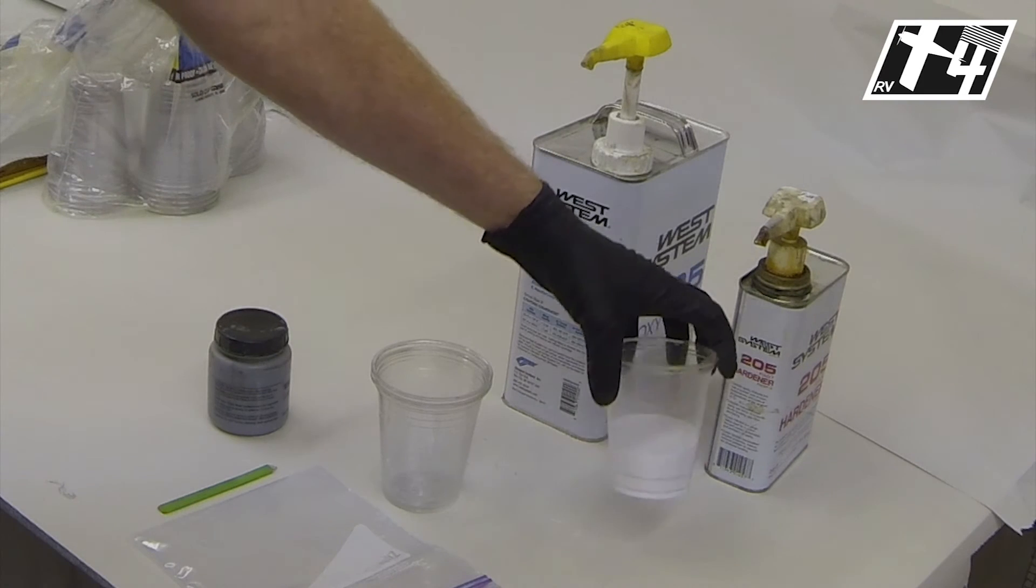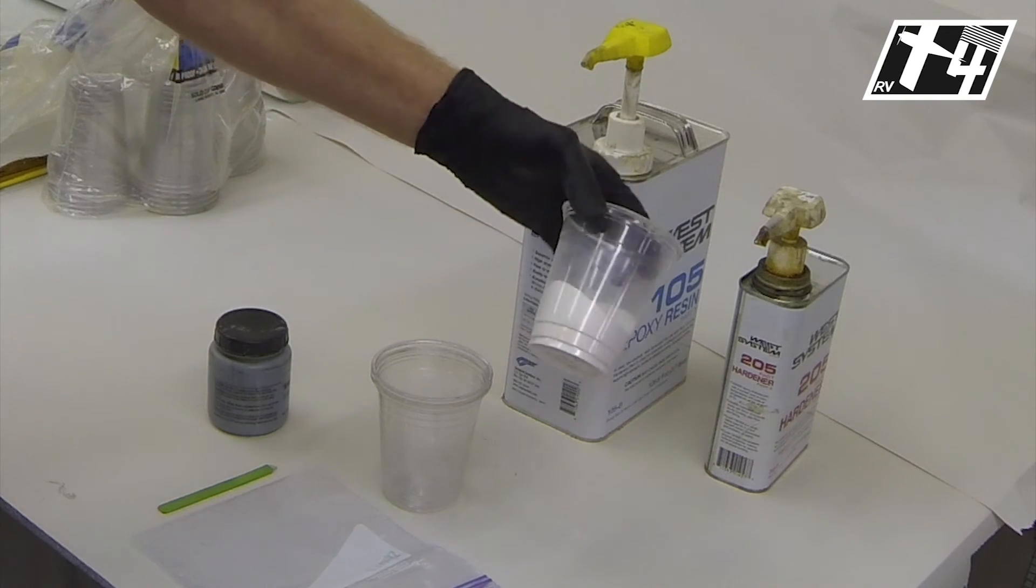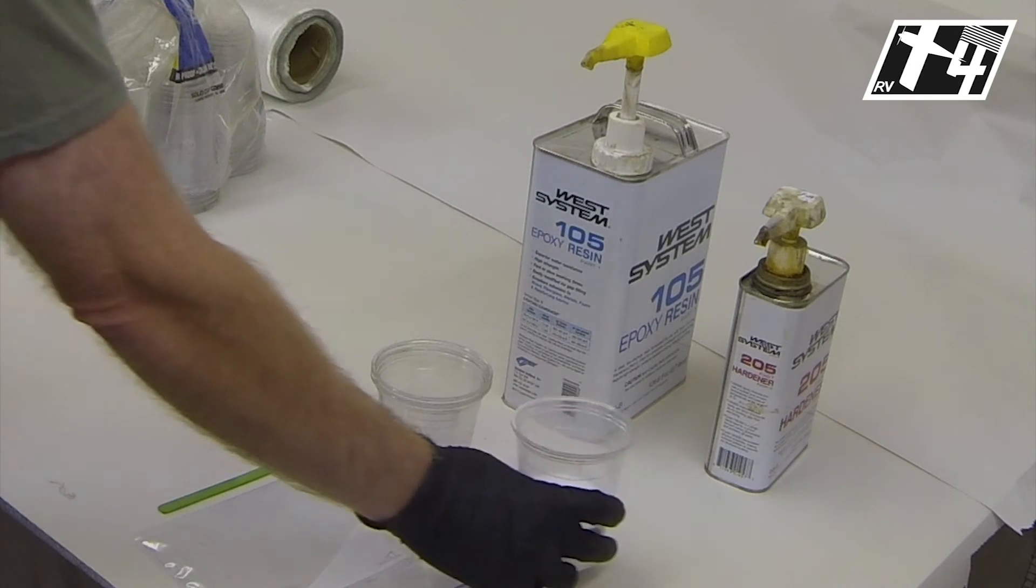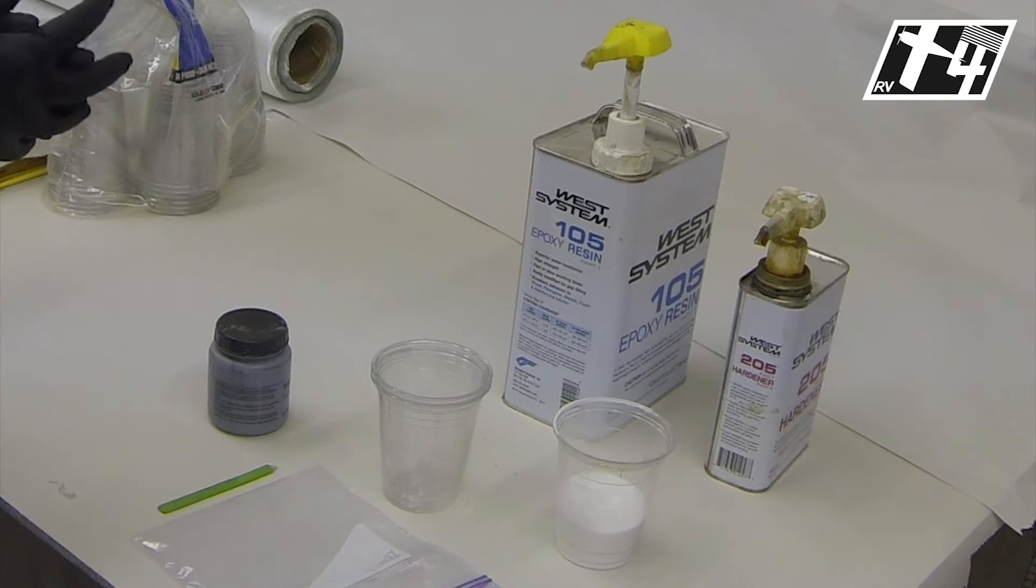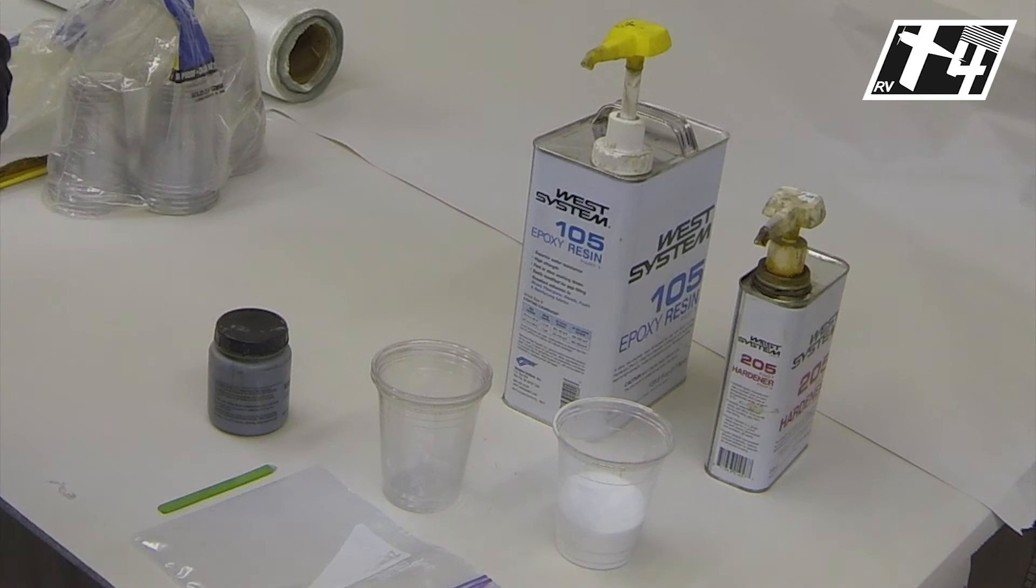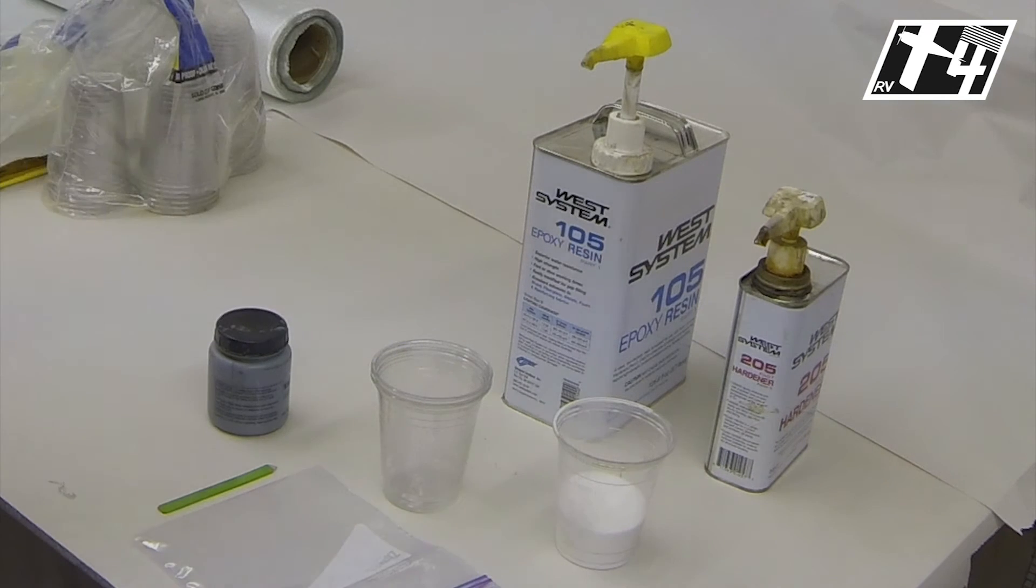I have a cup here with some micro balloons which is a hollow glass sphere that's extremely light and is very sandable in the resin which is why we're going to use it in this application. It's used in a lot of other places as an easy sand filler. It doesn't add a lot of weight. One caution with this stuff, because it is very light, it's very easy for it to get airborne. Not wearing one right now, but wearing a respirator or at least a dust mask is a really good idea when working with that. You don't want to be getting that in your lungs.